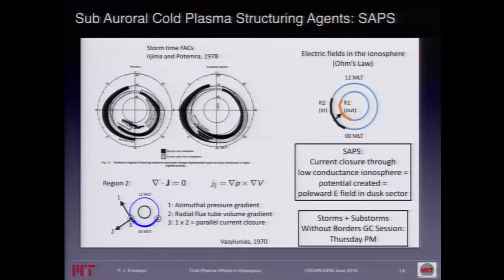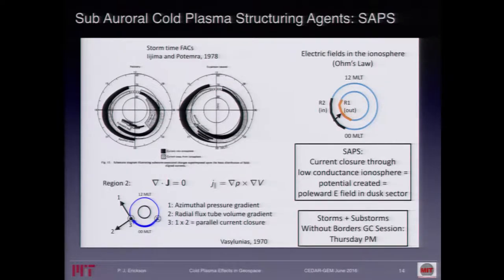Vasyliunas makes the simple argument that the azimuthal pressure gradient — more pressure versus less pressure — and the fact that the radial flux tube volume is also getting bigger, means that if you cross the two, you get parallel currents flowing in and out of the ionosphere. Mapping all of this down, you had Region 2 current coming in equatorward of where electrons were precipitating, and Region 1 was outward current, with closure through the low-conductance ionosphere. Because a lot of this occurred when the sun had started to turn off, a potential was created, and to close the current as the ionosphere became more insulating, you had to pump up the potential, ending up with a fairly intense polar electric field in the dusk sector.